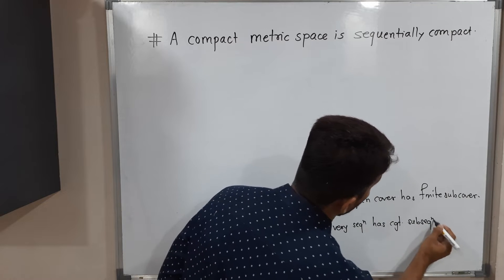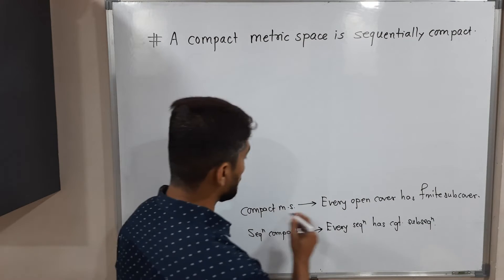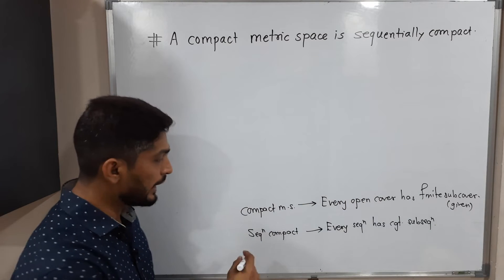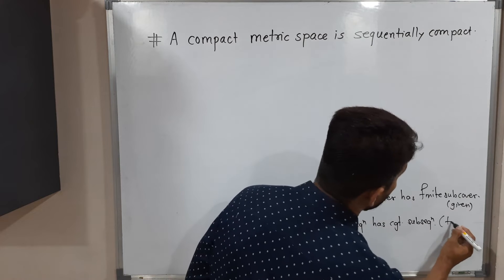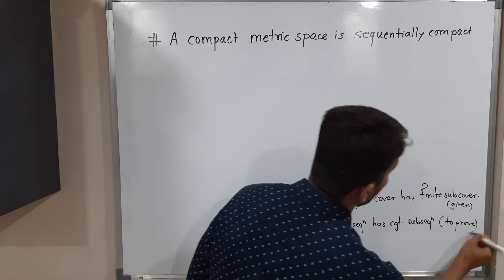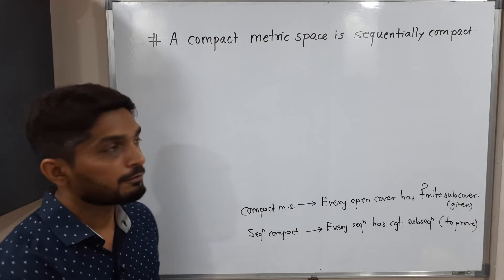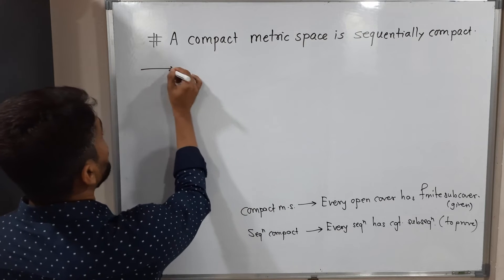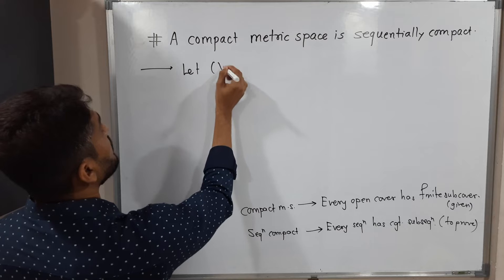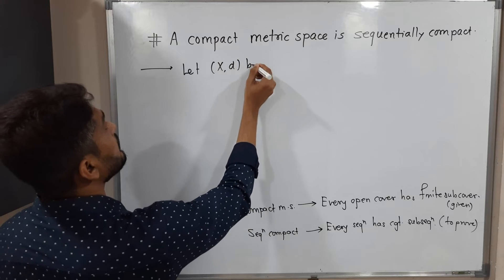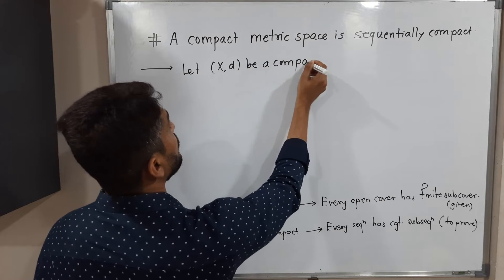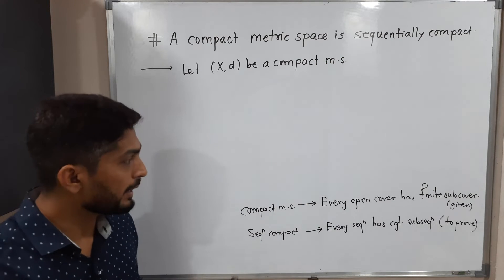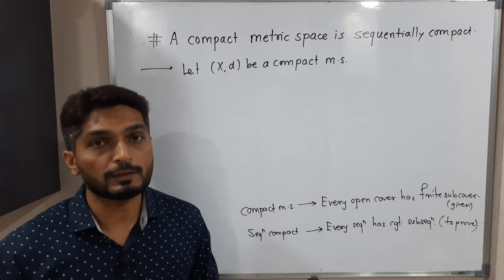So here the given part is that the metric space is compact, and what we have to prove is that it is sequentially compact. Let us start with the given information. Let (X, d) be a compact metric space. I am assuming a compact metric space and I have to prove that it is sequentially compact.